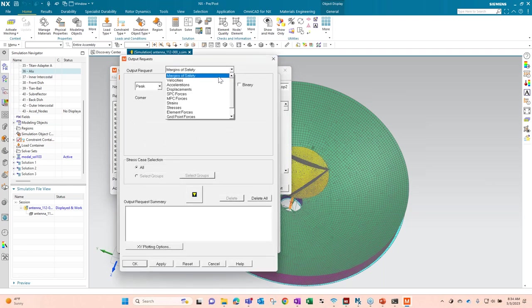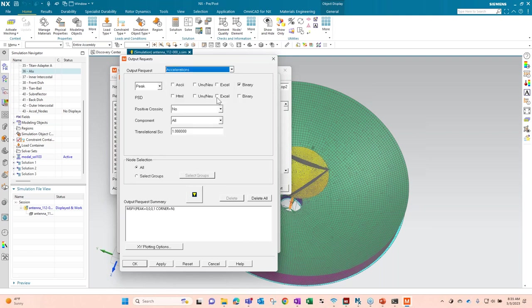And see some outputs. So again, margin of safety. You can generally, you can ask for text outputs, UNV or neutral files if you're using FEMAP, Excel. But most, for the most part, reading in the Simcenter, I'm going to be using the binary here. And if there were separate stress cases I'd created, you could choose separate groups. I'll click all there. And basically, we're just going through here. We're choosing all the results we want.